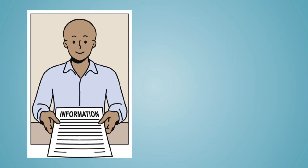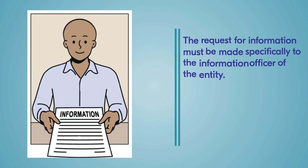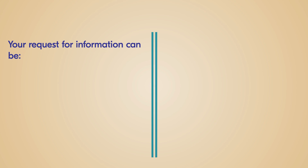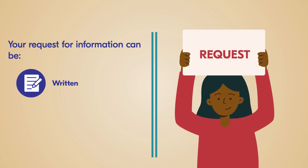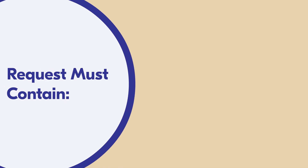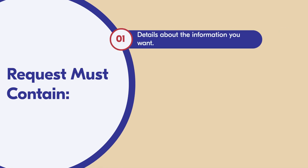It's important to note that the request must be made specifically to the information officer of the entity. Your request for information can be written or oral and must contain the following. One: enough details about the information you want — this will help the information officer identify that information.